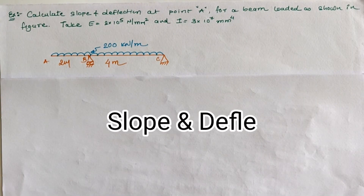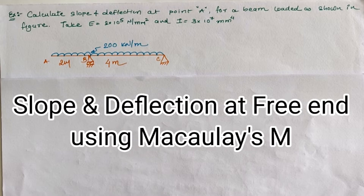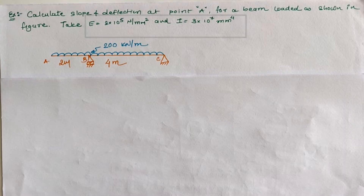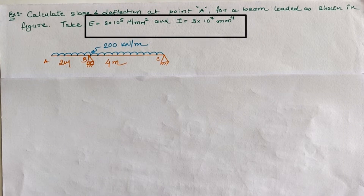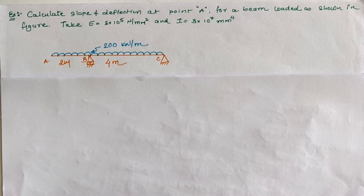Hello friends, today we are going to calculate the slope and deflection at point A for a given beam, having the modulus of elasticity E which is 2 × 10⁵ N/mm², while moment of inertia I is 3 × 10⁷ mm⁴.